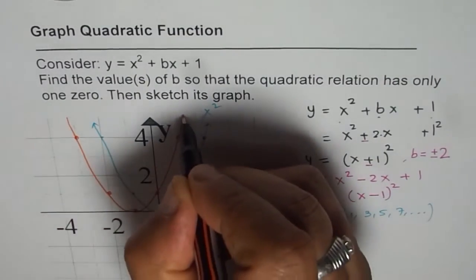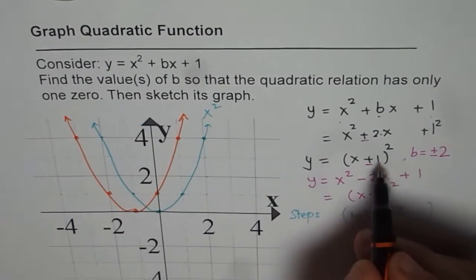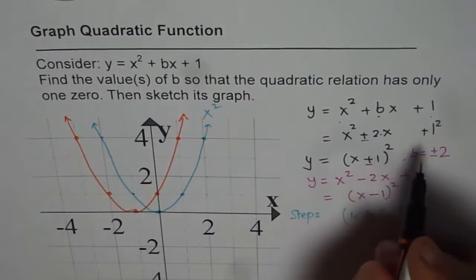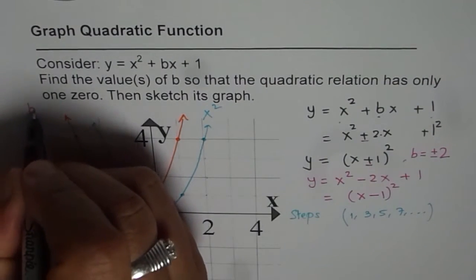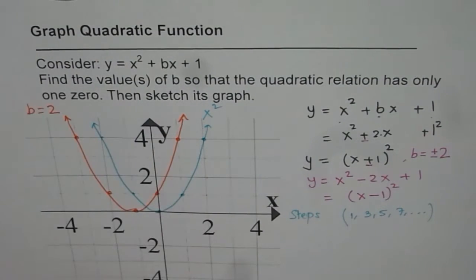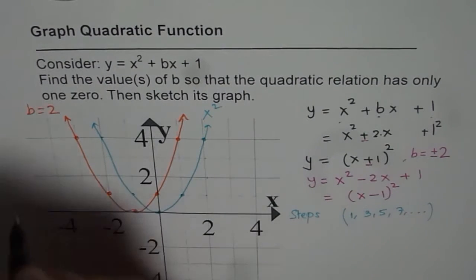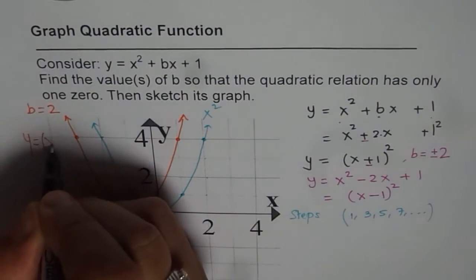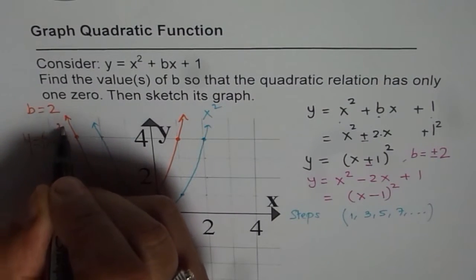So this is for the first one where the value of b is plus two. So this is when b equals plus two. And you have your function which is y equals x plus one whole squared.